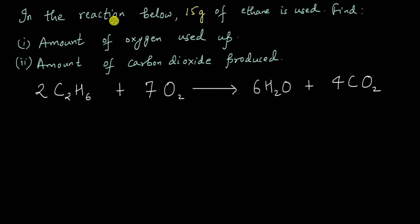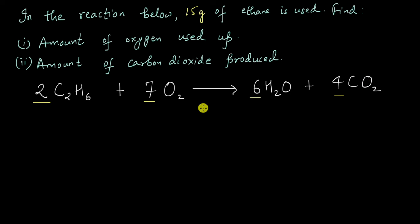In this video, let us solve this problem to better understand how we can use mole concept and stoichiometric coefficients — these numbers that are before the molecules — to find the amount of a reactant that has been used up or the amount of a product that has been produced in a reaction.